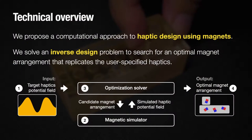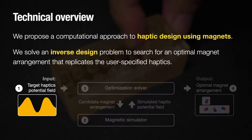Now, we describe the technical part of this study. Again, in this paper, we propose a computational approach to haptic design using magnets. We solve an inverse design problem to search for an optimal magnet arrangement that replicates the user-specified haptics. The process is divided into four sections.